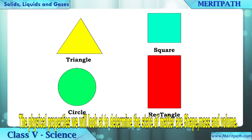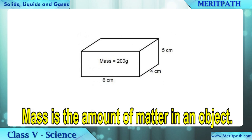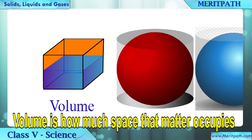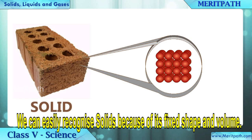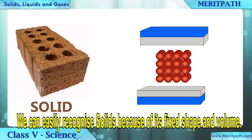The physical properties we will look at to determine state of matter are shape, mass, and volume. Mass is the amount of matter in an object. Volume is how much space that matter occupies.